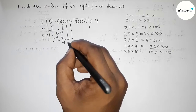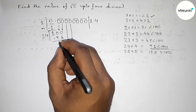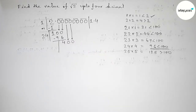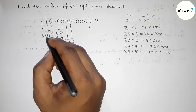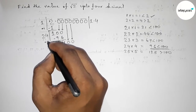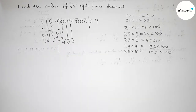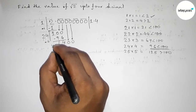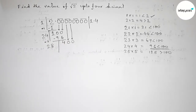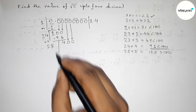So this is 96. Subtracting from 100, we get 4. Now write down the next pair of zeros, giving 400. Draw a division line. The last digit 4 added to itself: 4+4=8, so now we have 28 beside which we put a number.